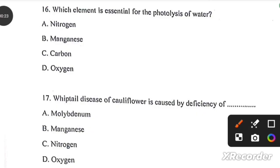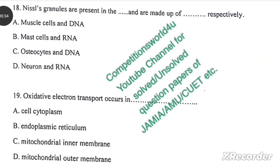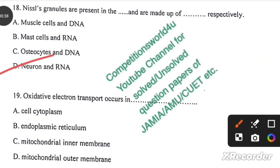Which element is essential for the photolysis of water? Manganese. Whiptail disease of cauliflower is caused by the deficiency of molybdenum. Nissel's granules are present in the neuron and are made up of RNA. Oxidative electron transport occurs in mitochondrial inner membrane.